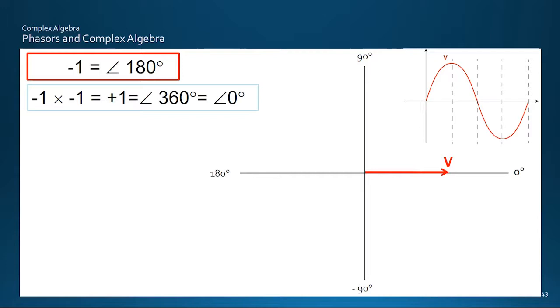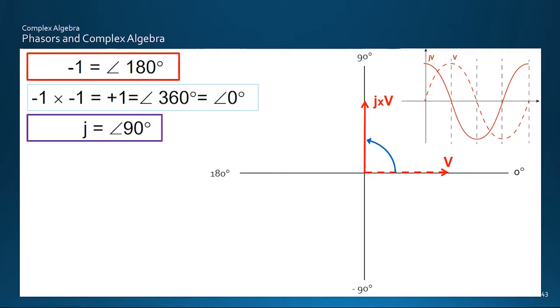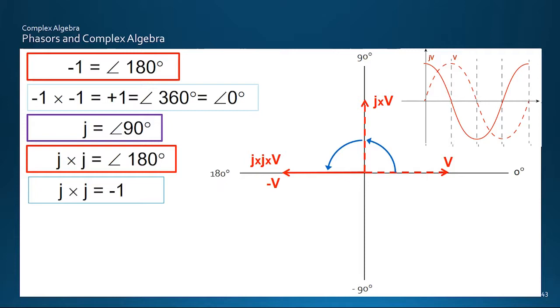Here's the thing. If multiplying by minus one gives us 180 degrees, let's pretend we have some operator which gives us a 90 degrees change in phase. Call it J, so that J times V points up. Then for consistency, multiplying by J twice will give us 180 degrees again. This means that J times J must equal minus one, lining up the red boxes here. And if J squared is minus one, then J must be equal to the square root of minus one.